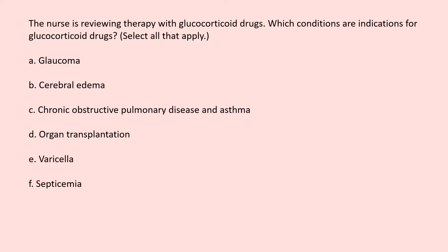The nurse is reviewing therapy with glucocorticoid drugs. Which conditions are indications for glucocorticoid drugs? Select all that apply. A. Glaucoma. B. Cerebral edema. C. Chronic obstructive pulmonary disease and asthma. D. Organ transplantation. E. Varicella. F. Septicemia.